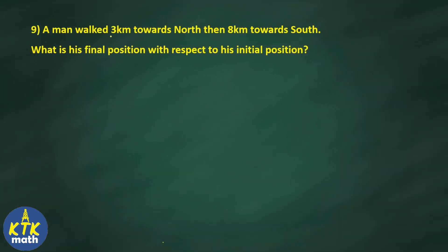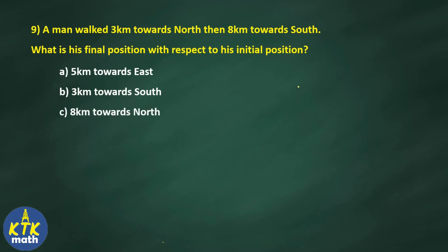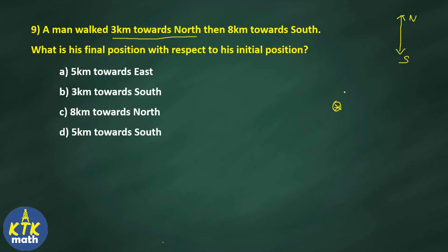Question number 9: a man walked 3 kilometers towards north, then 8 kilometers towards south. What is his final position with respect to his initial position? This question is based on distance and direction. The person first moves 3 kilometers towards north, reaching a new position.